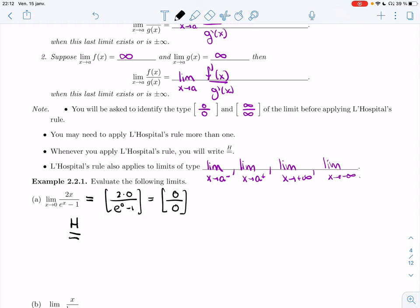I'm going to replace this by the limit where I take the derivative of the top and the derivative of the bottom. And so I get 2 over e to the x. And now if I plug in 0 to this new limit, I get 2 over 1, I get 2. And so the original limit is 2 as well.